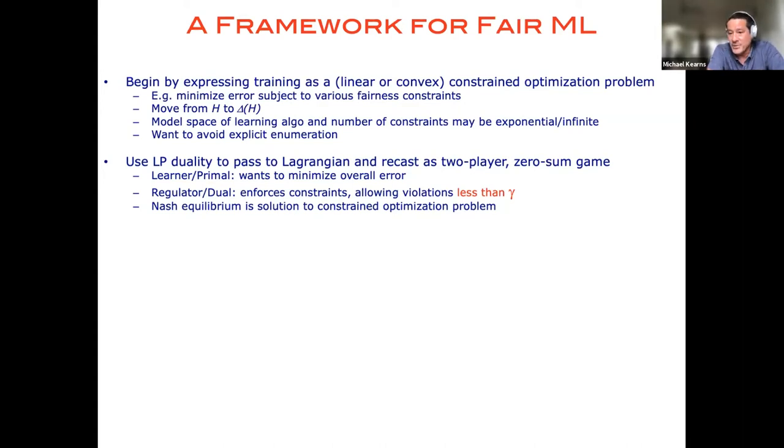So instead of asking that the error rates between different racial groups be numerically identical, I might ask that they be within 1% of each other or 5% of each other. And of course, by relaxing the constraints, I give myself more wiggle room to optimize the objective and then we'll be able to kind of trace out a trade-off between the error and the fairness violations. Okay, and so I probably don't need to tell anybody in this meeting that once you pass to this two-player zero-sum game, the Nash equilibrium of this game is actually the solution to the original constrained optimization problem we wrote down.